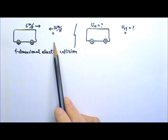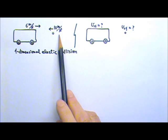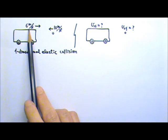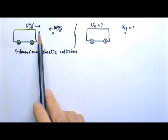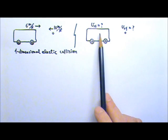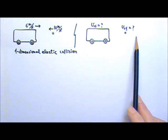A ping-pong ball is thrown to the west at 10 meters per second towards a school bus traveling at 6 meters per second to the east. If the collision is one-dimensional and elastic, what are the final velocities at the end of the collision?